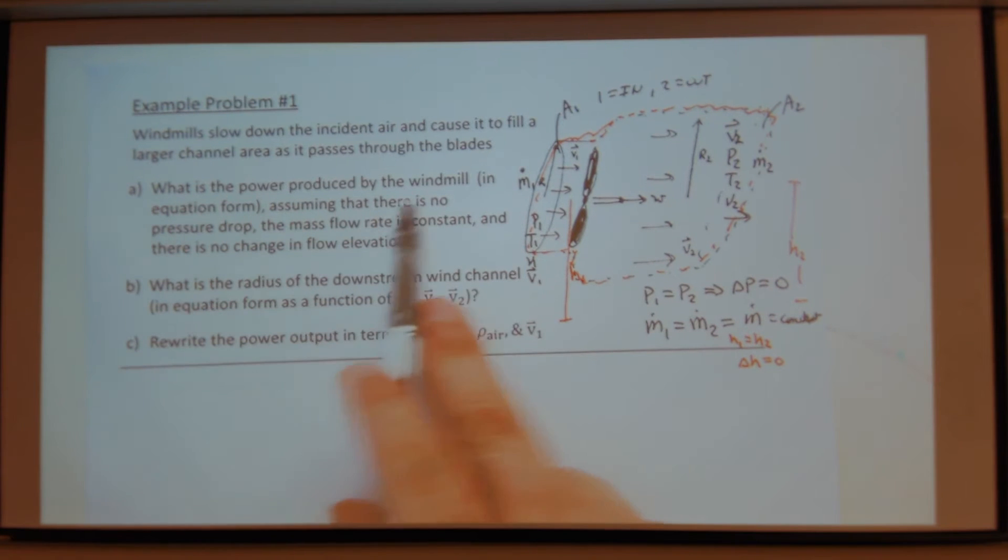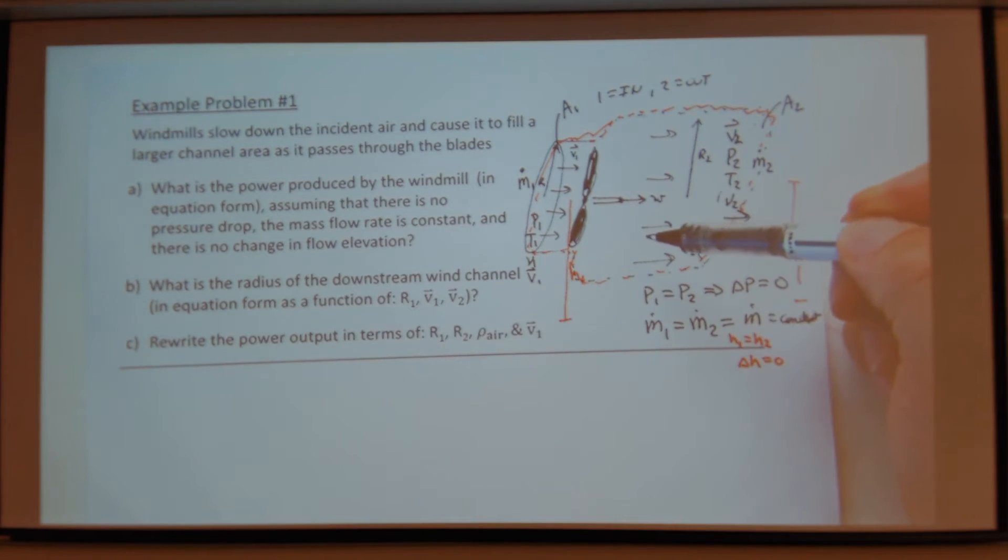So what is the power produced by the windmill in equation form? So step one was to draw a schematic, try to outline all the properties and everything you can think of. So you do that as much as you can just by thinking about it. The next step, once you're done, if you can't think of anything more, just move on. So what's the next step?